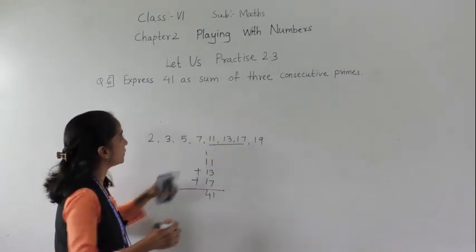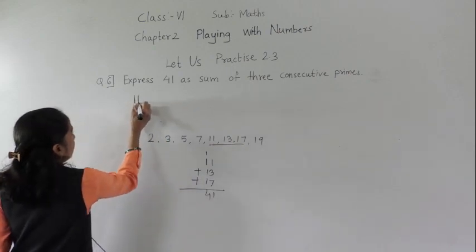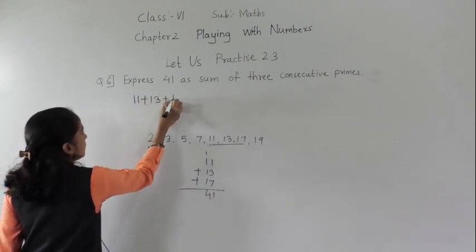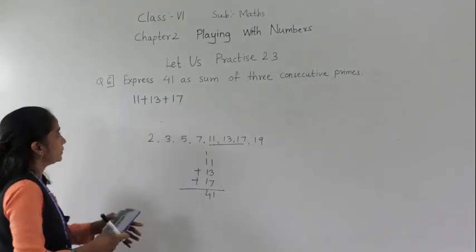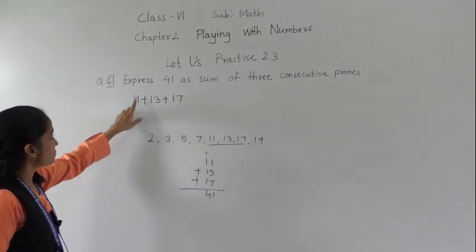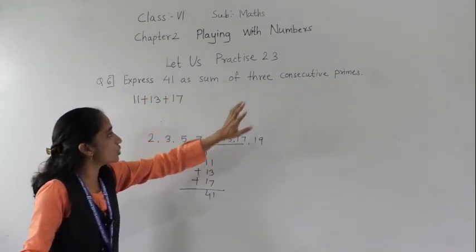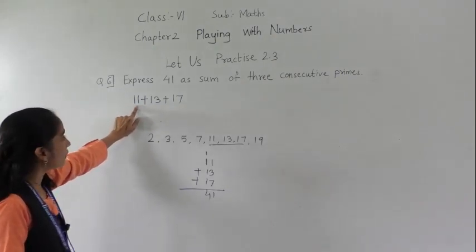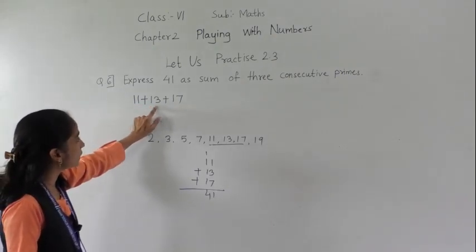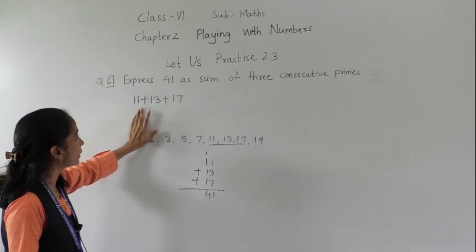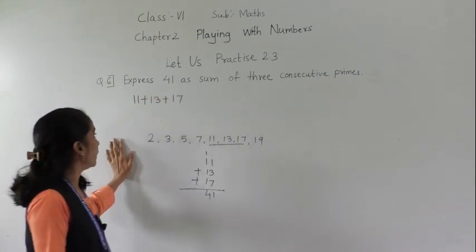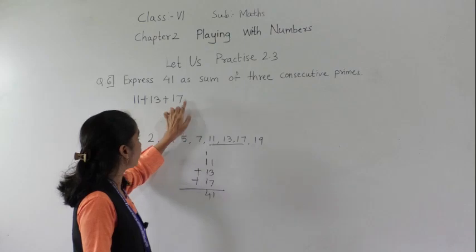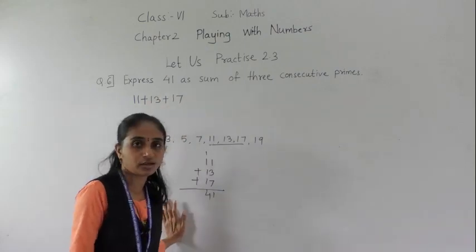With the numbers eleven, thirteen and seventeen. So eleven plus thirteen plus seventeen equals forty-one. Express forty-one as the sum of three consecutive primes — the answer is eleven plus thirteen plus seventeen, and their sum is forty-one.